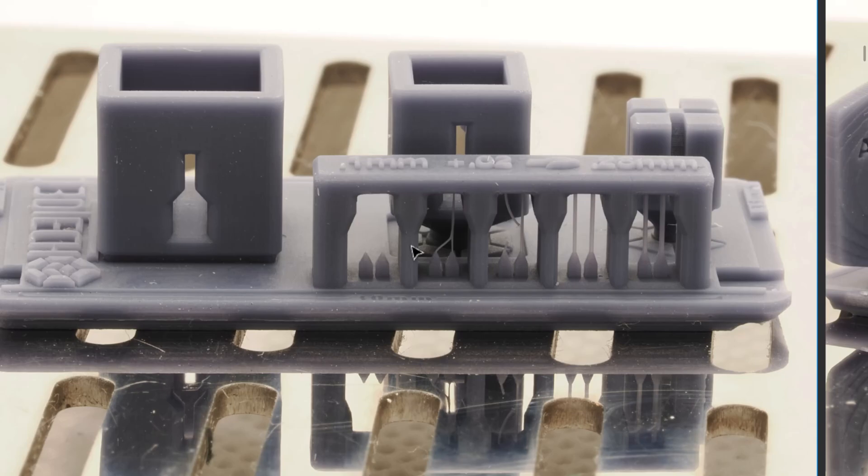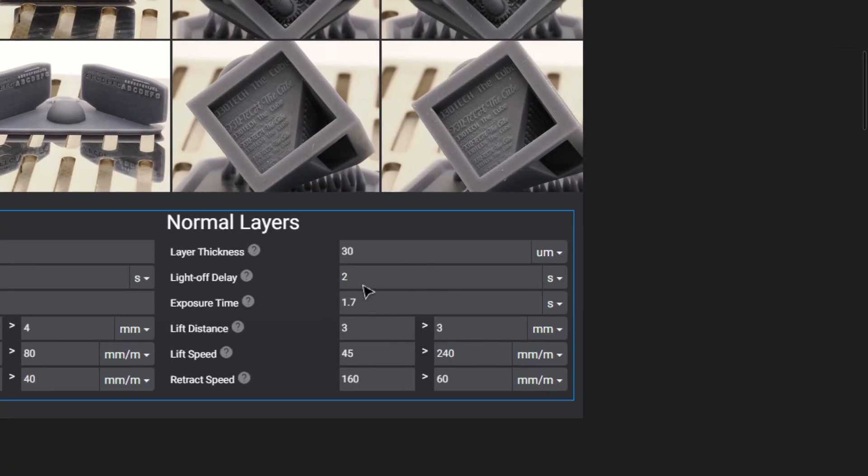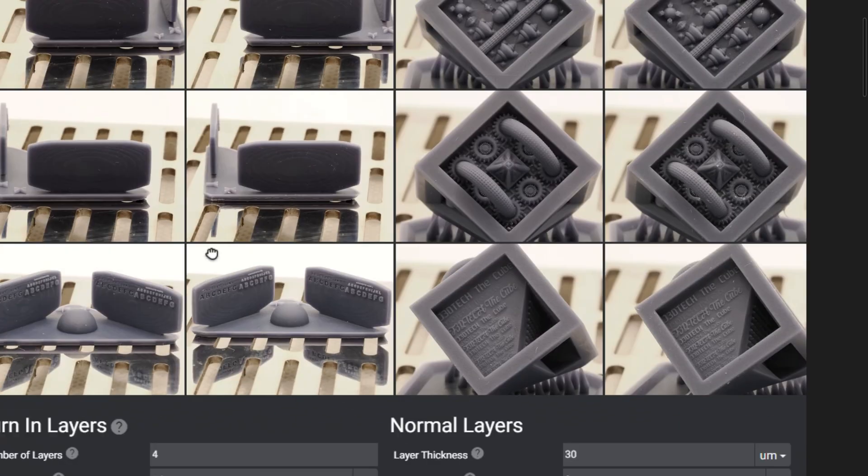Now these pillars are exactly the same size dimensionally, the settings are here, they're printed exactly the same, two second lift delay. I'm moving very very slow up, very very slow down to make sure I get a nice dimensionally accurate print.